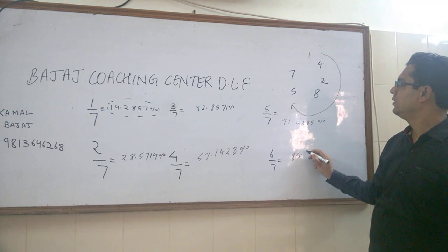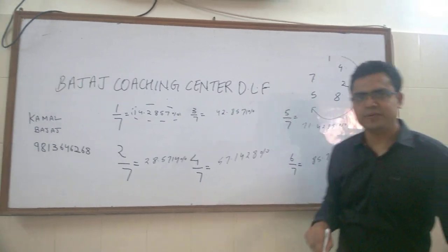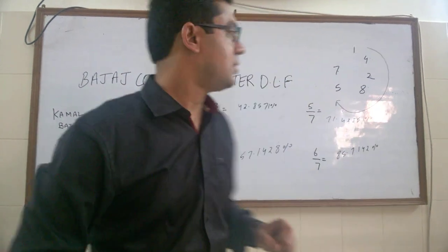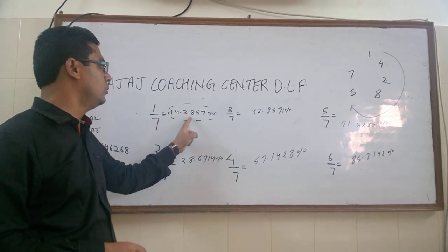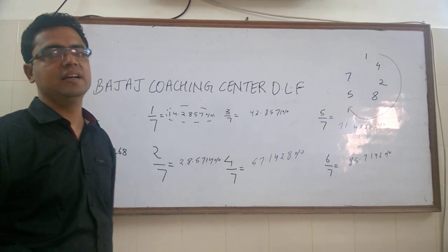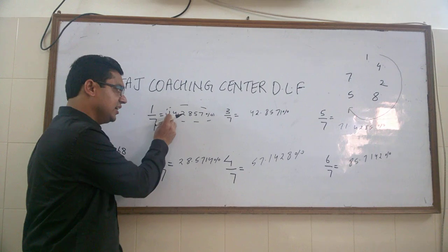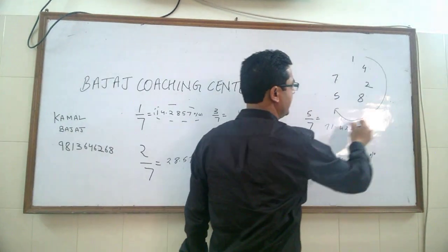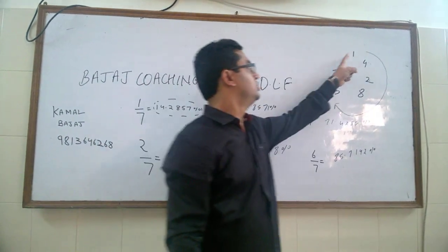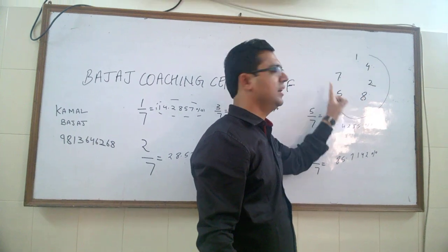Now I will explain the concept in Hindi. If we know that one by seven is 14.2857, we can find all others.